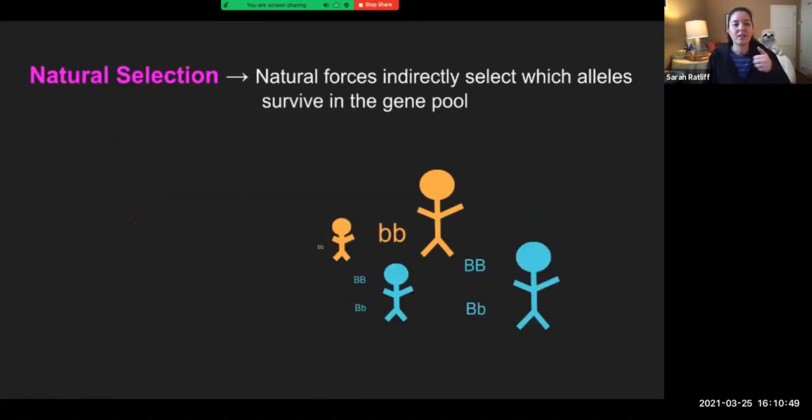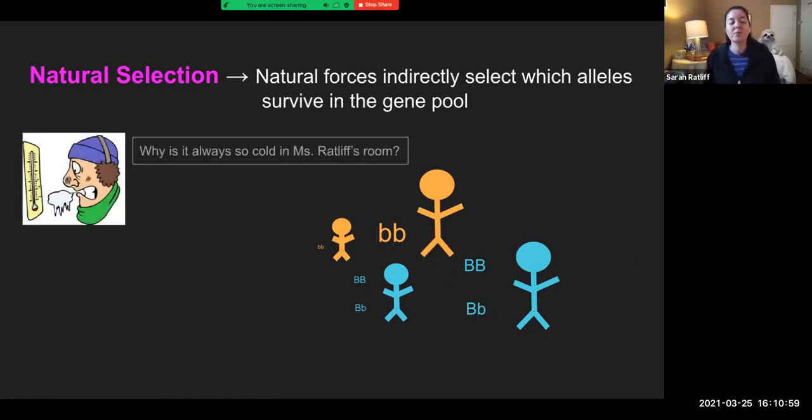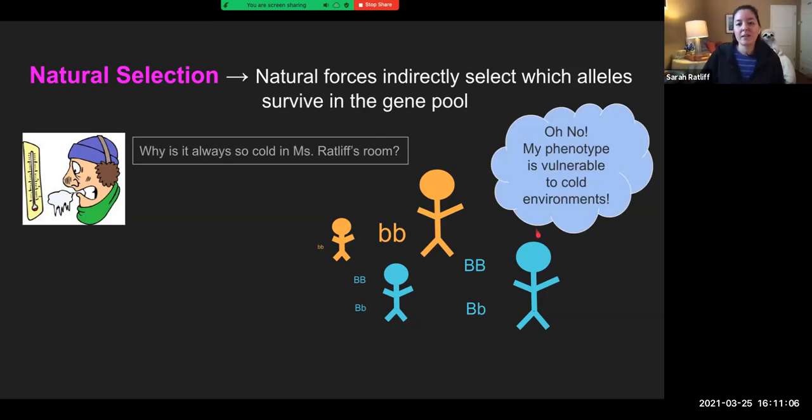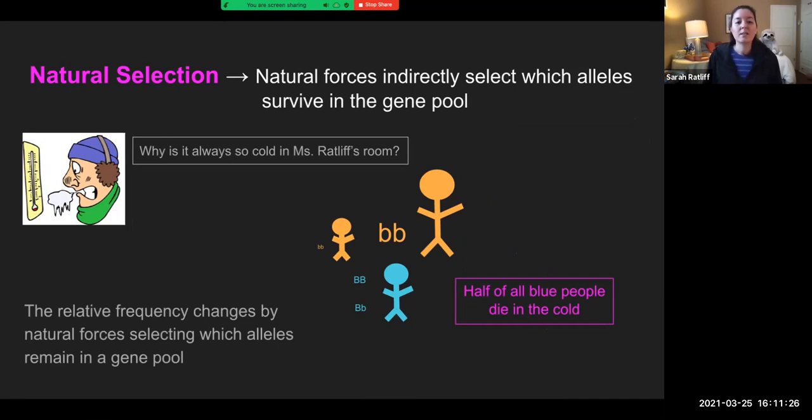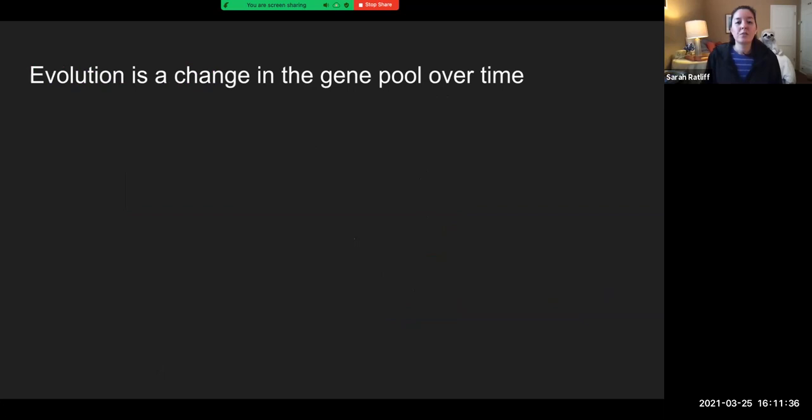Lastly here, our natural selection, our thumb. Natural forces indirectly select for which alleles survive the gene pool. So this is a lot like our bunnies in the very beginning. Thumbs up for adaptations. So my room, I know we haven't been in there yet, but it is often very, very cold. Well, this guy right here, oh no, they don't have a phenotype that can adapt to those cold environments. They are vulnerable. They will die out. Now, half of the blue guys are dead. That changed the frequency of those alleles in our gene pool. We selected naturally which alleles remained, the ones that could survive that cold, miserable room.